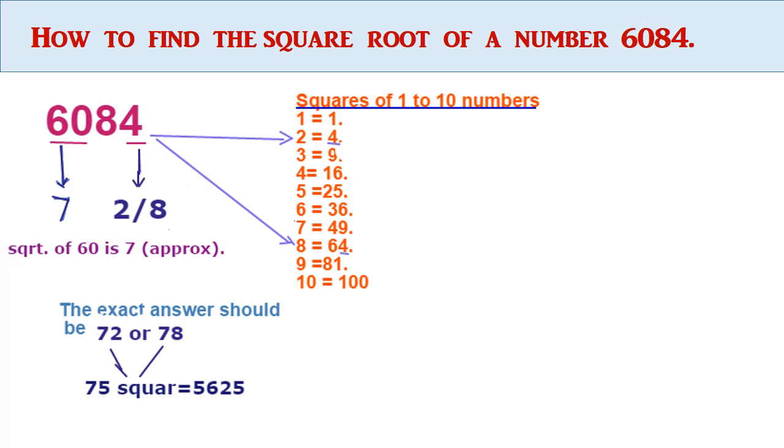Let us solve one more example. Find the square root of the number 6084. Here, the unit digit is 4. In the squares of 1 to 10 numbers, 2 squared equals 4 and 8 squared equals 64. The unit digit of our answer should be 2 or 8.